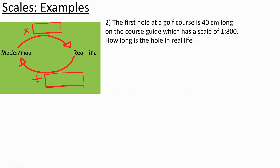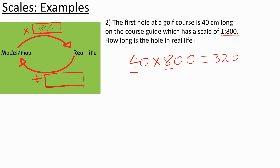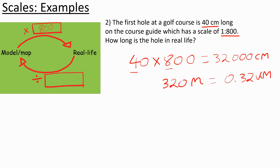The first hole at a golf course is 40 centimetres long on the course guide, with a scale of 1 to 800. We want to work out how long the hole is in real life. We're going from the model to real life, so we multiply by 800. So 40 times 800: 4 times 8 is 32, giving us 32,000 centimetres. Converting to metres by dividing by 100 gives 320 metres, or dividing by 1,000 gives 0.32 kilometres — under half a kilometre.